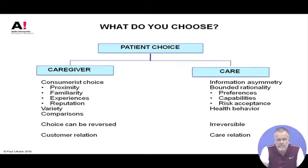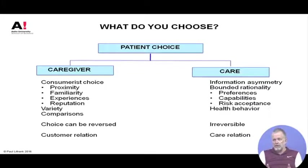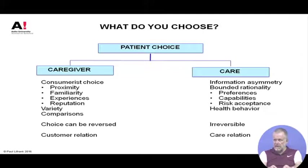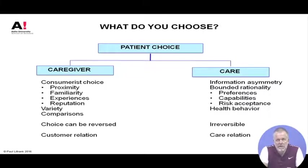With co-creation and patient empowerment, the question of under what conditions a patient can choose rationally, and which areas allow choice and which do not, is rather central. The basic constellation here is that as a patient you have two kinds of choices.